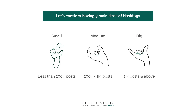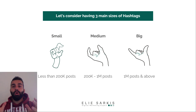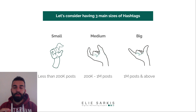Let's consider having three main sizes of hashtags: small, medium, and big. Small hashtags have less than 200,000 posts. Medium hashtags have between 200,000 and 1 million posts. Big hashtags have over 1 million posts. We need to mix our hashtags between small, medium, and big.